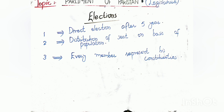Regarding elections, in Pakistan there is a direct method of election for members of the National Assembly — they are directly elected by the people of the Islamic Republic of Pakistan. The National Assembly's 336 seats are divided such that 60 are reserved for women, and the remaining approximately 265-266 seats are from constituencies. The entire country is divided into constituencies on the basis of population, and people are directly elected from their own constituencies. For example, Punjab has a population of about 11-12 crore, so it has 173 seats, while KPK has a smaller population and fewer seats.